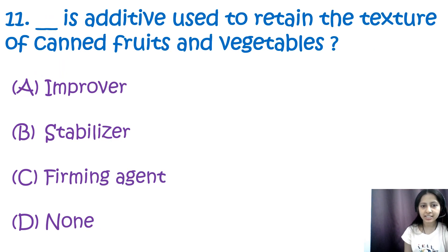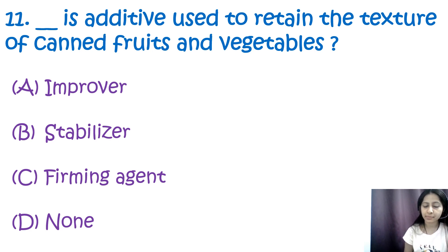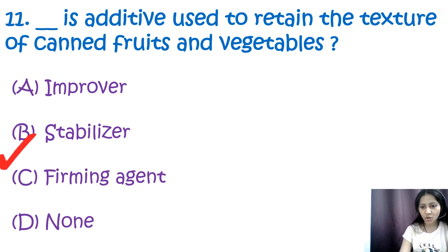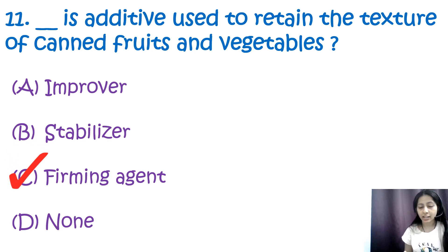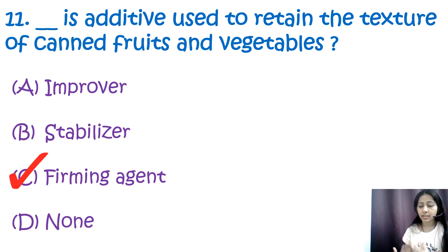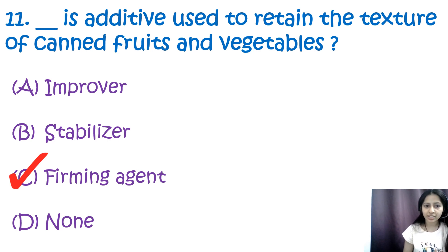Question 11: Blank is an additive used to retain the texture of canned fruits and vegetables. Options are improvers, stabilizers, and firming agents. The correct answer is C, firming agents. Firming agents are substances added to precipitate residual pectins, thereby strengthening and supporting the tissues of canned fruits and vegetables and preventing collapse during processing.